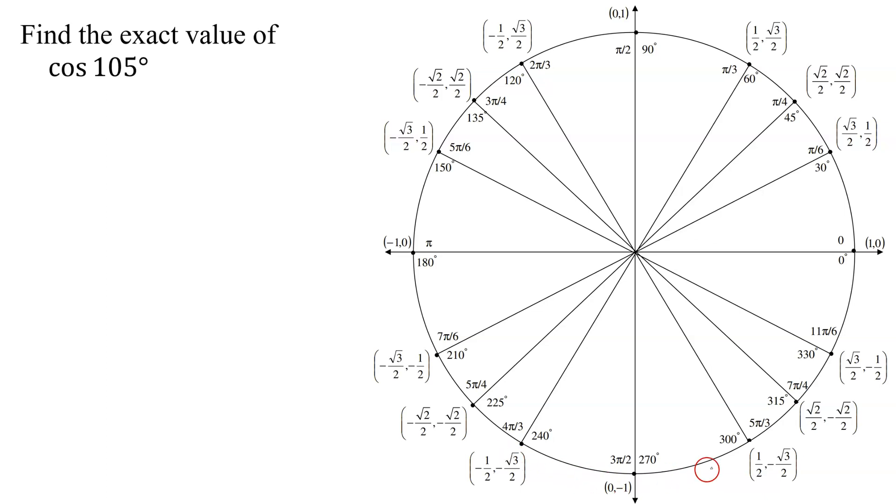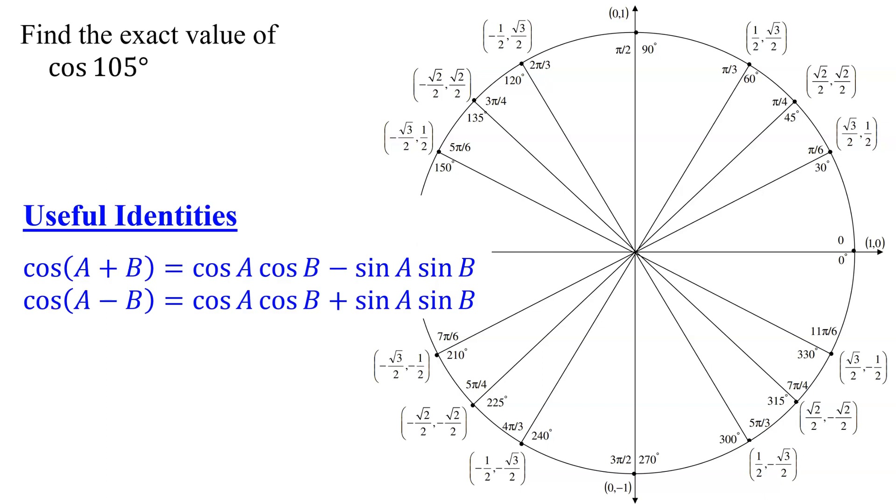So I'm going to have to use my unit circle shown over here along with some identities. And here are a couple of useful identities: the cosine of a sum and the cosine of a difference.